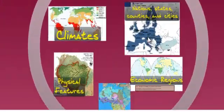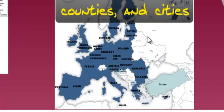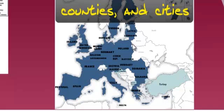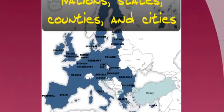Nations, states, counties, and cities can be formal regions because they have formal boundaries. They're not really changing unless there's war or some kind of conflict. We can prove where their boundaries are.